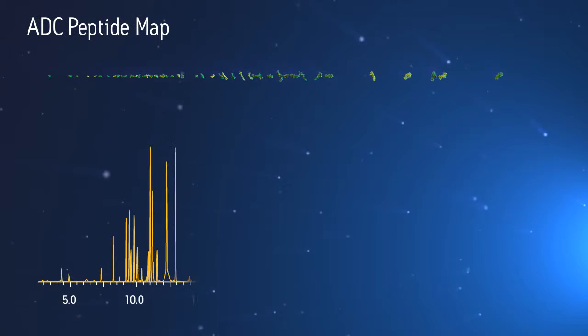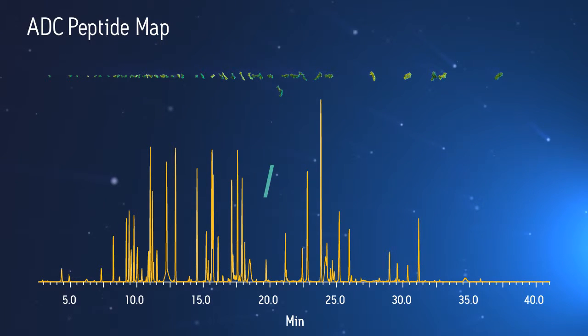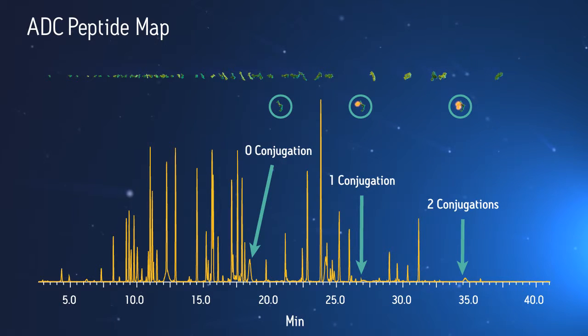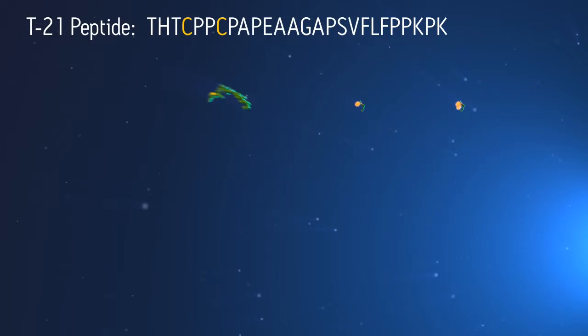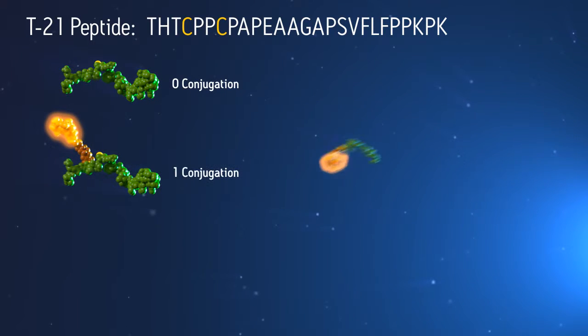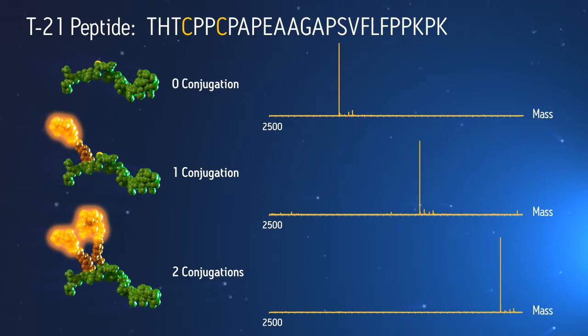A drug conjugated peptide will be shifted in retention time and mass relative to the matching peptide of the control. This peptide contains two cysteines, so zero, one or two conjugations are possible. UPLC-MS data show precise mass shifts that confirm the presence of all three possibilities.